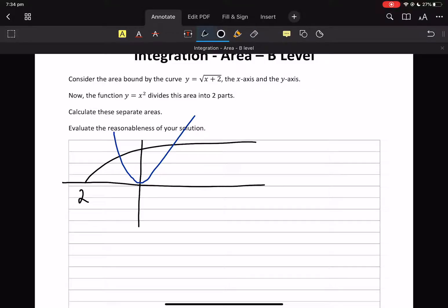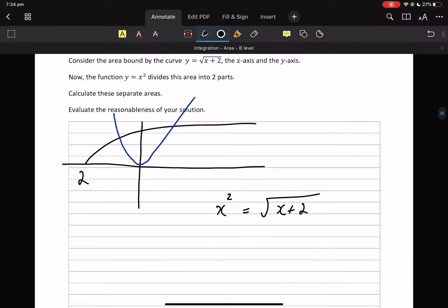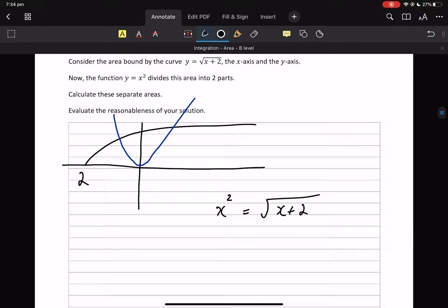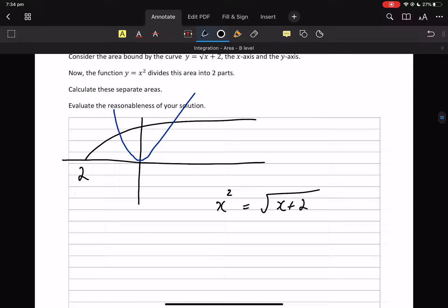How hard will the external exam be? So we need to find that point of intersection by solving simultaneously. If you can see it, (-1)² = -1 + 2. (-1)² is 1, -1 + 2 is 1, that 1 equals 1, x = -1.